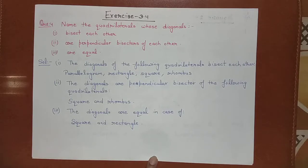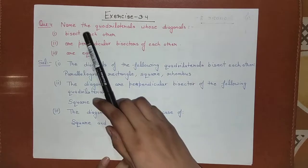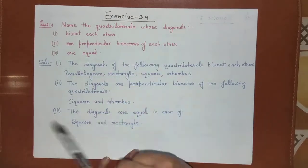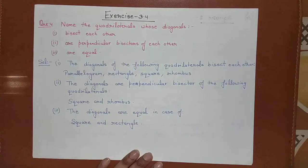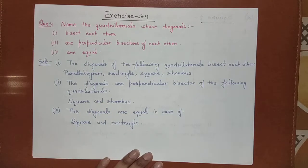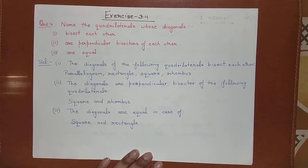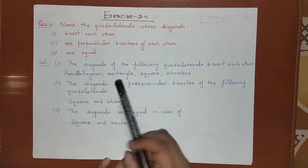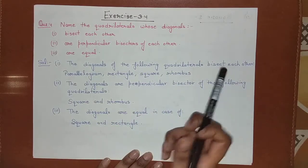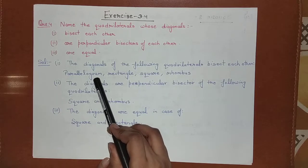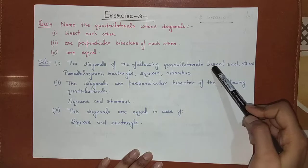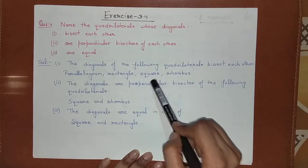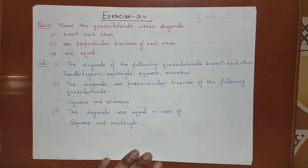In Exercise 3.4, Question 4: Name the quadrilaterals whose diagonals bisect each other. The diagonals of the following quadrilaterals bisect each other: parallelogram, rectangle, square, and rhombus. These are the 4 quadrilaterals whose diagonals bisect each other.